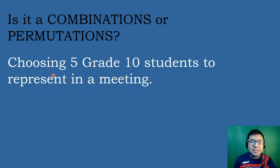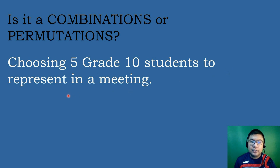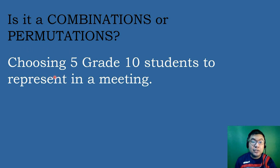The second situation: choosing 5 grade 10 students to represent in a meeting. This obviously illustrates combinations because in combinations, order is not important. We will just choose 5 grade 10 students regardless of who comes first among those students.